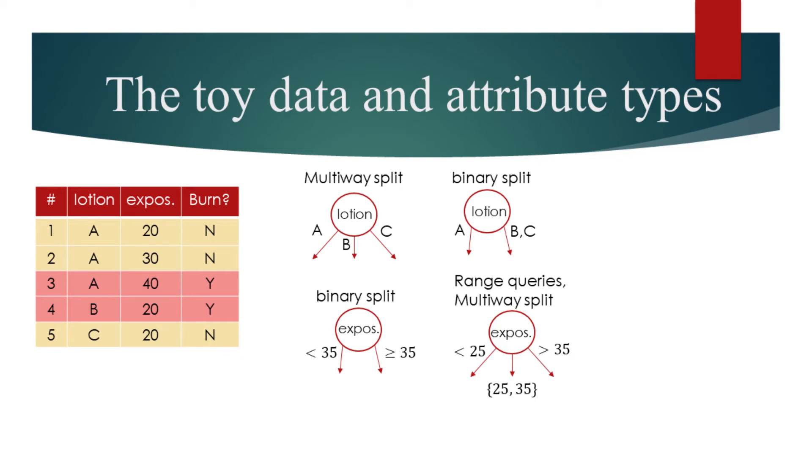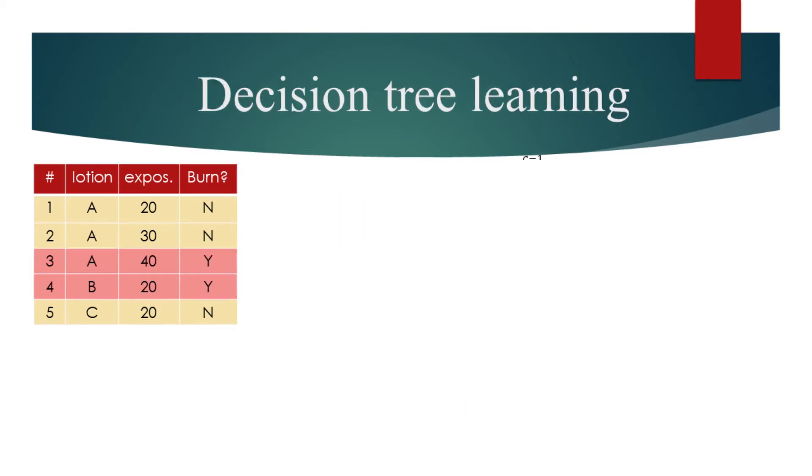Let's now consider a top-down, greedy approach to building a decision tree. At each step, we try the possible ways of splitting the data and then choose the best split. For simplicity, we will only consider the multi-way split for the lotion and binary split for the exposure.